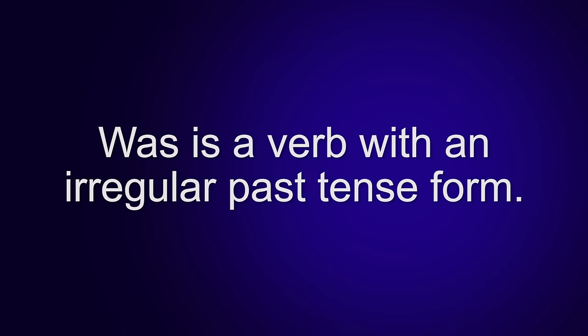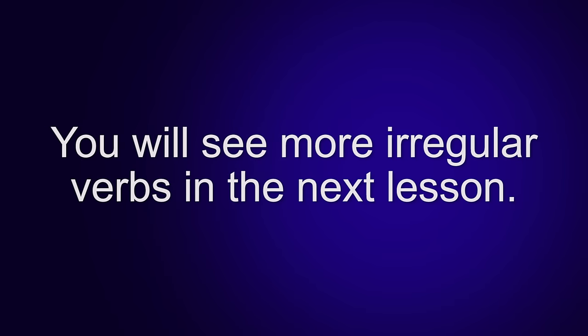Was is a verb with an irregular past tense form. You will see more irregular verbs in the next lesson.